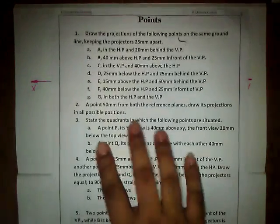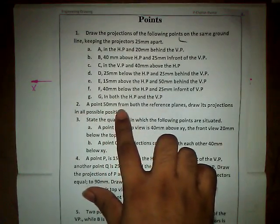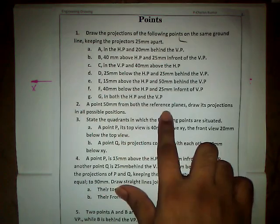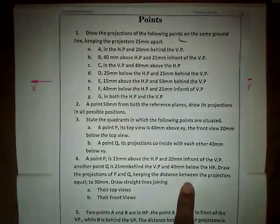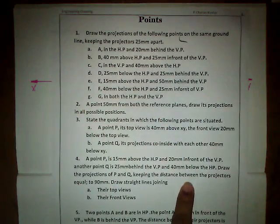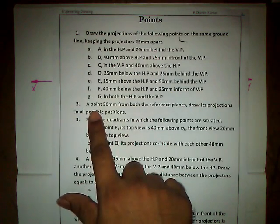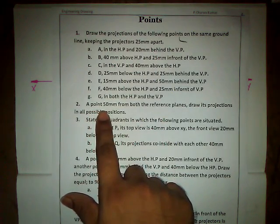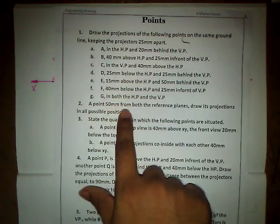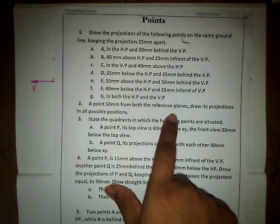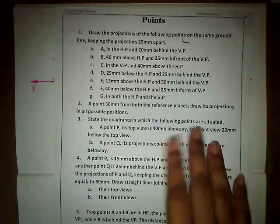We have a point 50mm from both the reference planes, and we need to draw its projections in all possible positions. The name of the point, let us keep it as point P. It is 50mm from both the reference planes, which are nothing but the HP and VP.